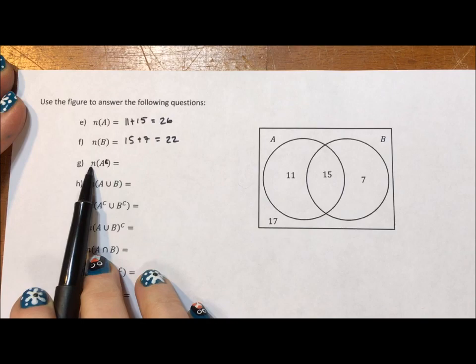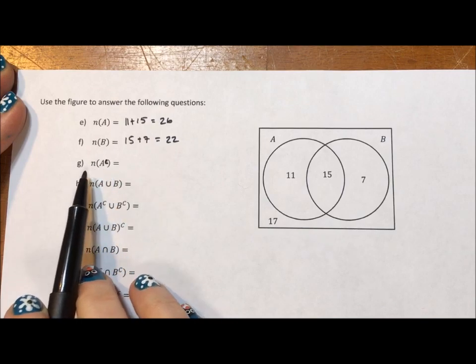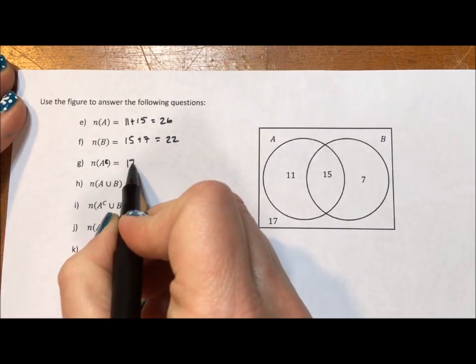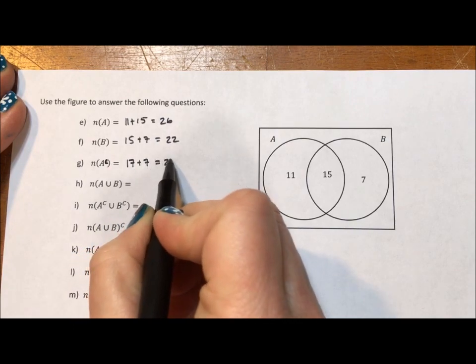The number, that's what that N means, of the complement of A, that means these regions that aren't A. So that's going to be the 17 plus 7, which is 24.